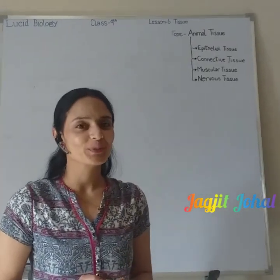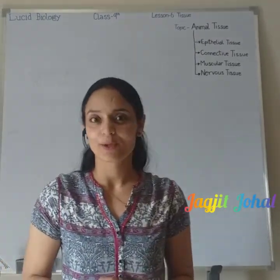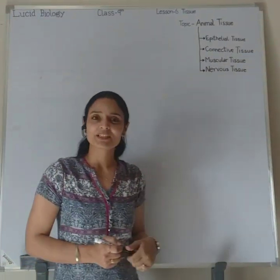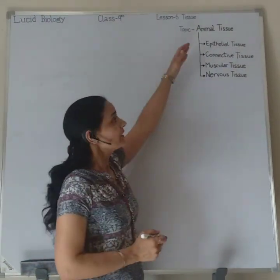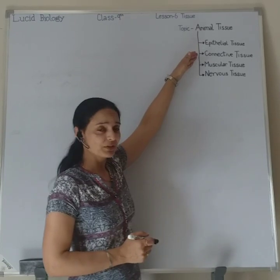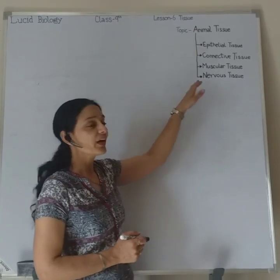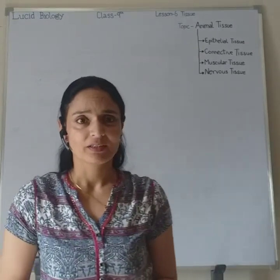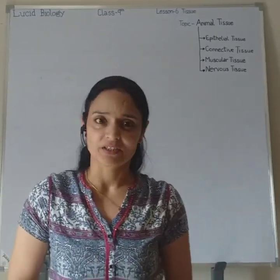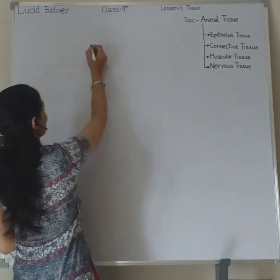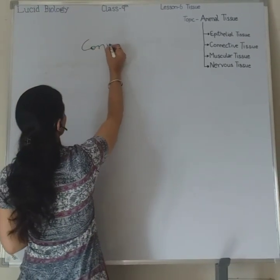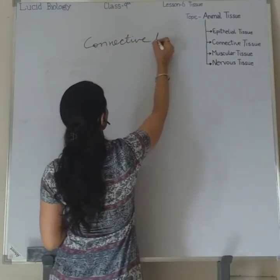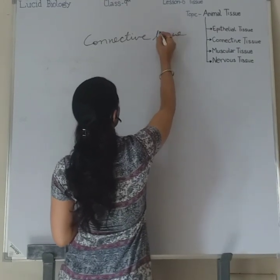Hi students, welcome to the channel 'You See Biology'. Today we are going to study animal tissue. Animal tissue is of four different types: epithelial tissue, connective tissue, muscular tissue, and nervous tissue. We have already done epithelial tissue in detail, and today we are going to start connective tissue.